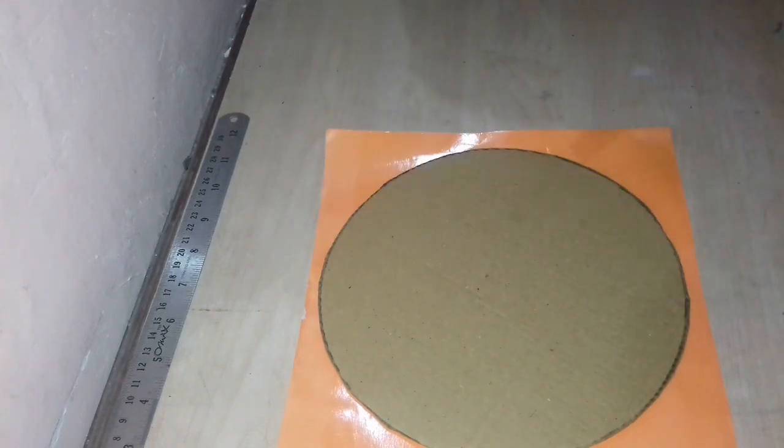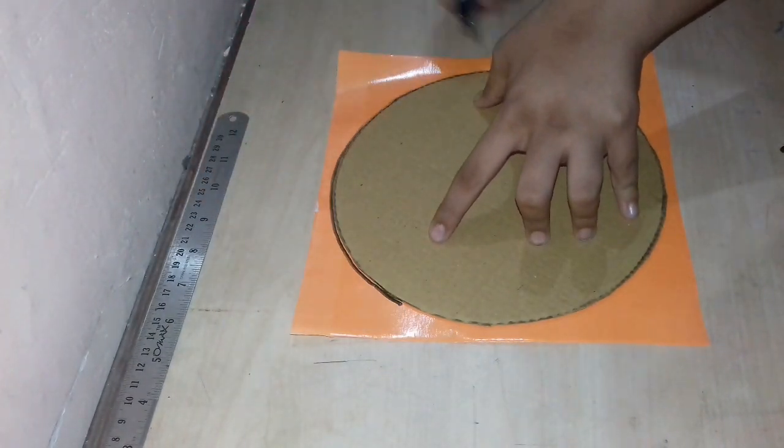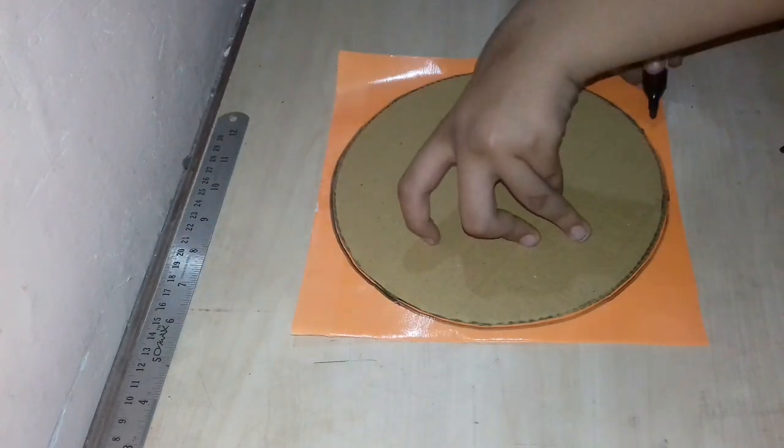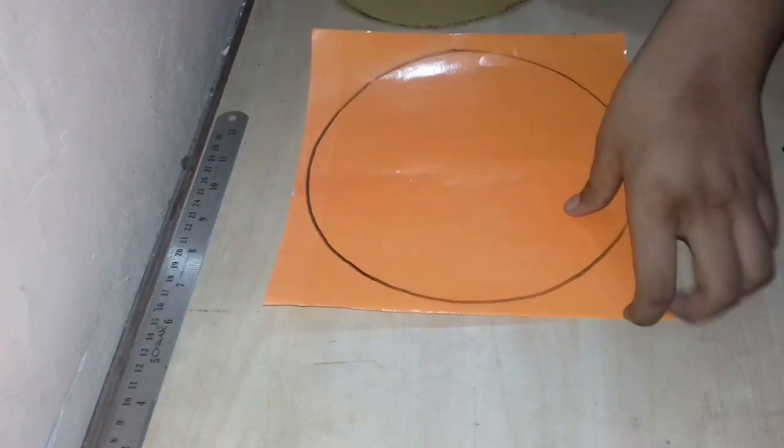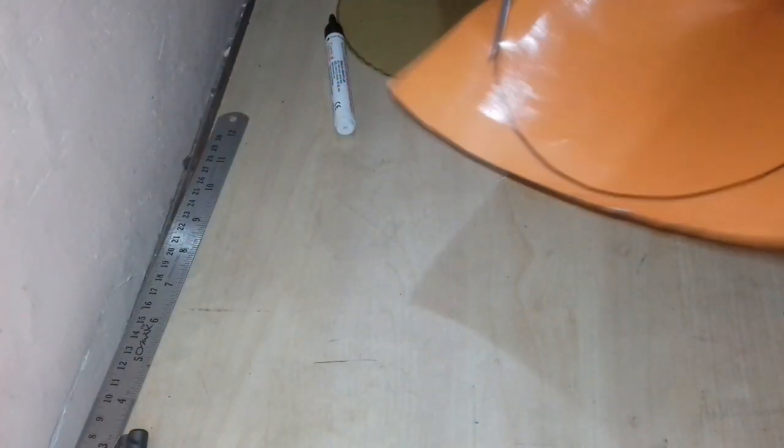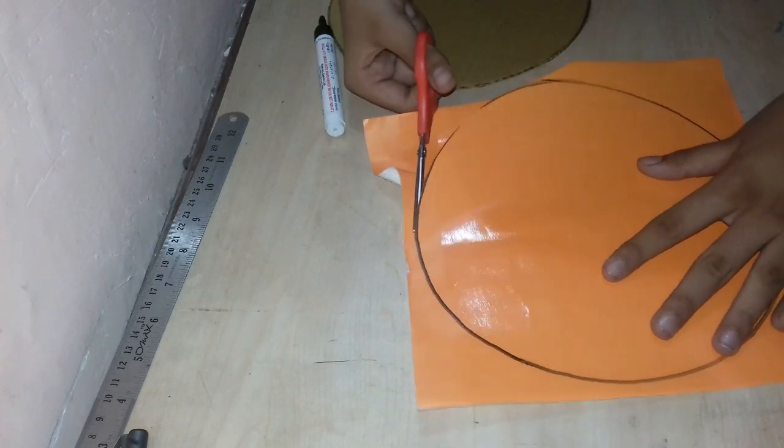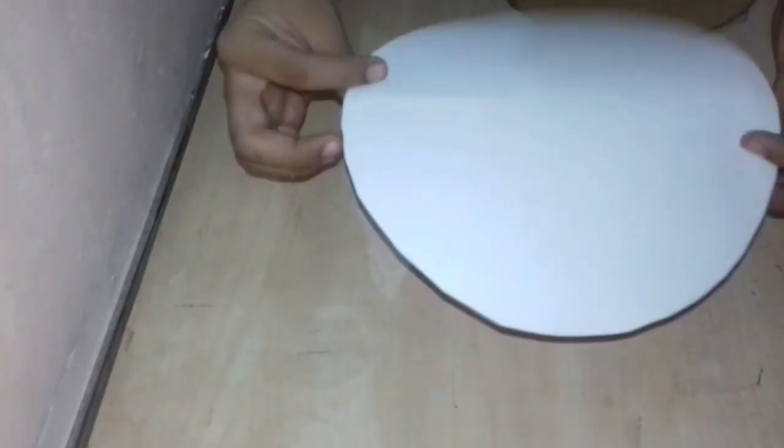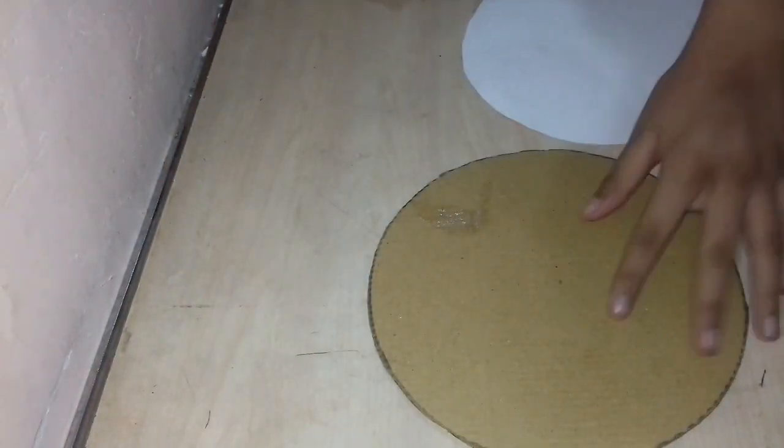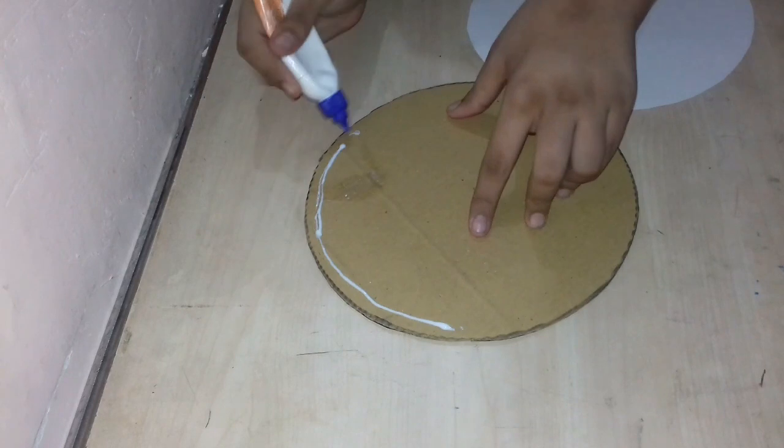We'll take colored paper to paste on the cardboard. I have taken orange color, you can choose any. Now I have cut the circle and will paste it on the cardboard as I have told.